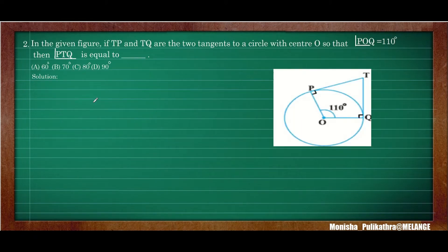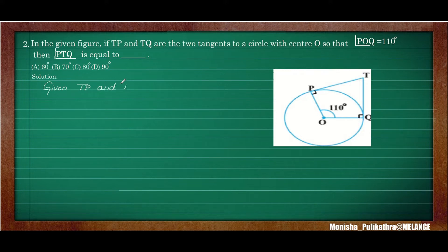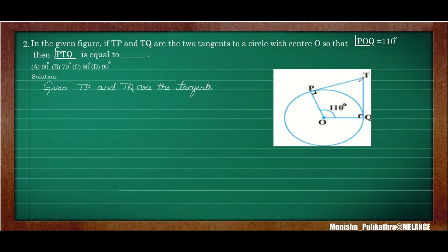The second question: In the given figure, if TP and TQ are the two tangents to a circle with center O such that angle POQ is equal to 110 degrees, then angle PTQ equals what? We need to find out the value for angle PTQ. Given TP and TQ are the tangents. By the perpendicular theorem (theorem 4.1), if the radius and tangent touch at a point of contact, it will be 90 degrees.